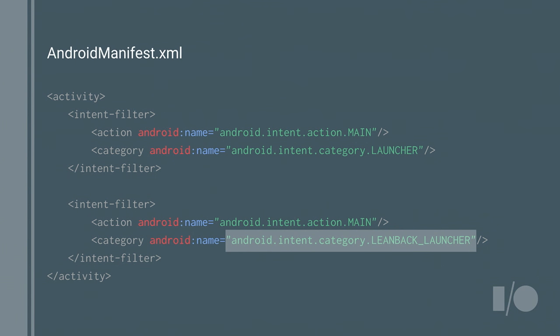Next, you need to declare the activity to launch when someone clicks on the banner. You'll have an existing intent filter with action MAIN and category LAUNCHER. Just add a second intent filter to your existing activity with the category LEANBACK_LAUNCHER. The reason we separate LAUNCHER and LEANBACK_LAUNCHER is that best practice is to eventually create your own TV-specific UI and layouts. For now, throw it in your existing activity and see how much works — you'd be surprised how much works right out of the box.